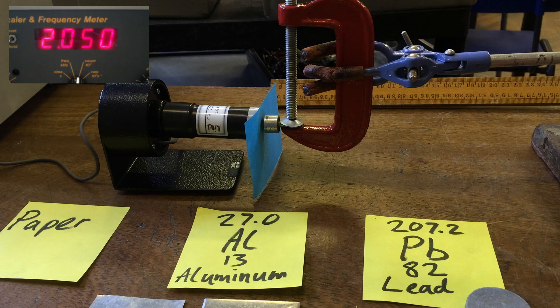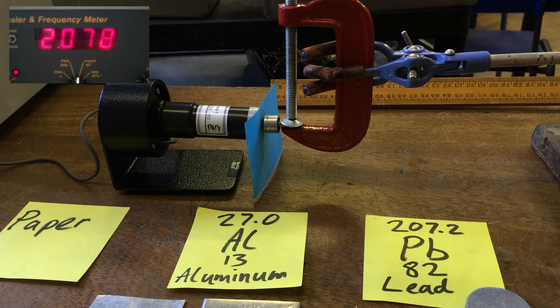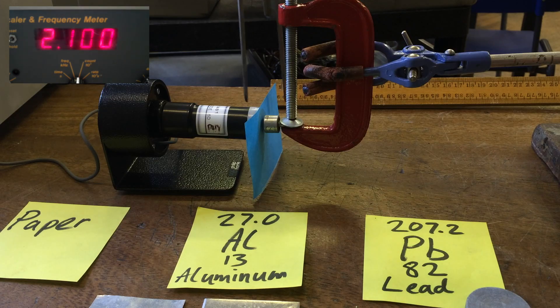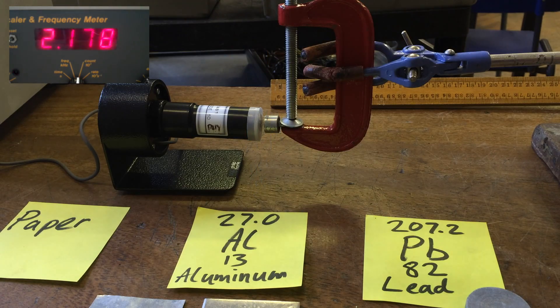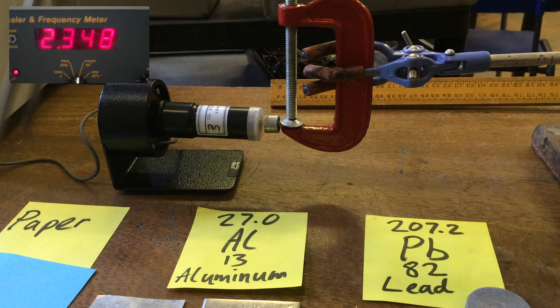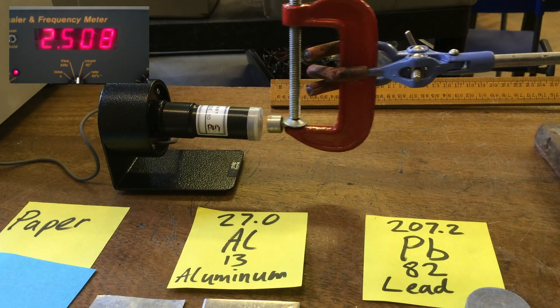Our count has gone down quite noticeably. Paper stops alpha particles. When we take the paper away, it goes nuts again. That's the first kind of ionizing radiation, called alpha particles.